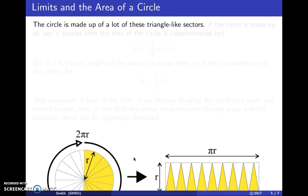The circle, though, is made up of lots of these triangle-like sectors. If the circle is made up of, say, n sectors, as in the picture below, then the area of the circle is approximated by ½rs, the area of a sector, times n, the number of sectors.